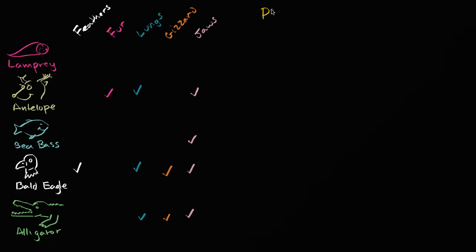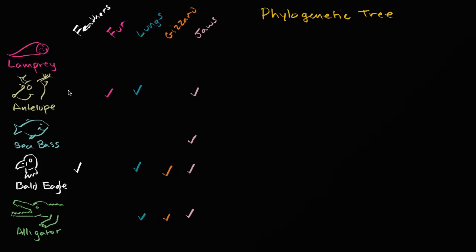So let me write this down — that's what we're going to create: a phylogenetic tree. Phylo comes from the Greek for group, kind, or tribe, and genetic comes from the word genesis. How do these things come about? How do the different groups, or in this case the different species, come about?